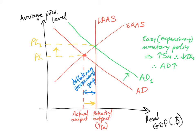Now let's see what happens when the central bank adopts an easy or expansionary monetary policy — two words for the same thing. An easy or expansionary monetary policy is where the central bank increases the money supply and therefore lowers interest rates, which therefore increases aggregate demand. The central bank would adopt this if there is a deflationary or recessionary gap, where the economy's actual output is less than its potential output. The central bank would increase the money supply and lower interest rates to shift aggregate demand from AD to AD1 and hopefully close this recessionary or deflationary gap.